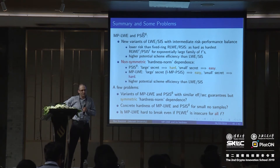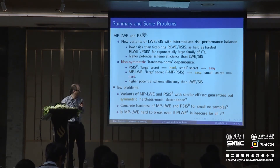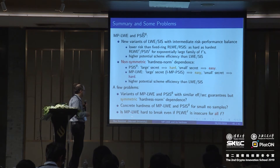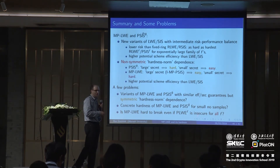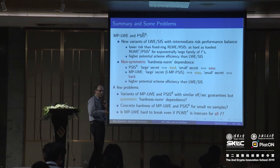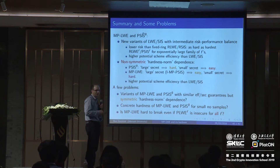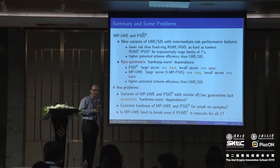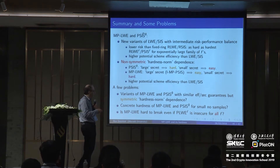Does it have a worst-case to average-case reduction? Yes, so what we showed is that MPLWE is as hard as PLWE-BOT-F. And there are already known worst-case reductions for the worst-case problems, so you can combine these two to get worst-case reductions for MPLWE, but it will be with respect to ideal lattices or module lattices. That's a good question because we don't know — maybe there is another class of worst-case lattices that we can directly reduce to MPLWE. That would be quite interesting.